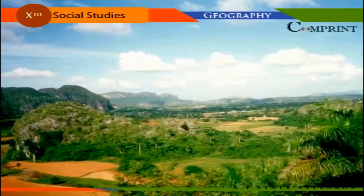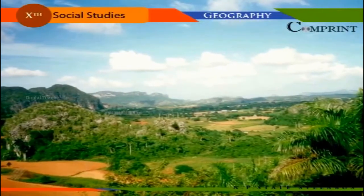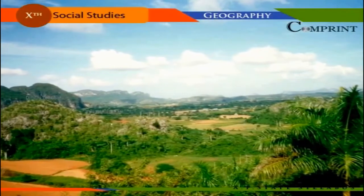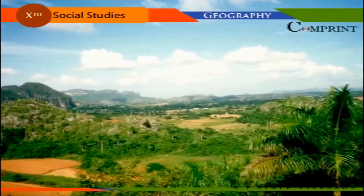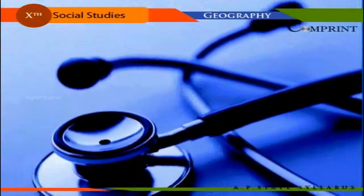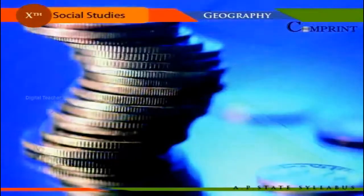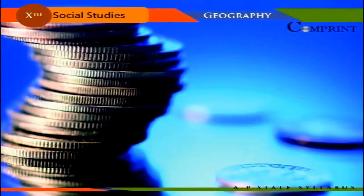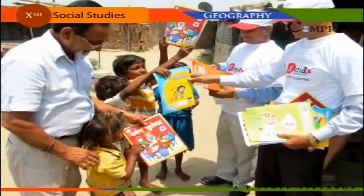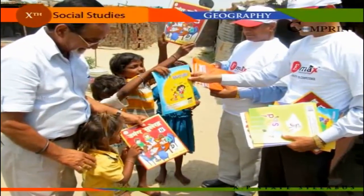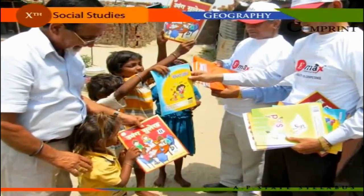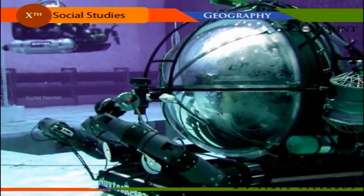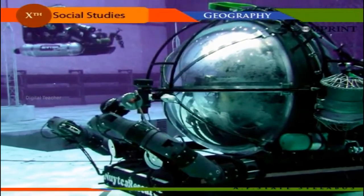Besides primary agriculture, the development of secondary and tertiary economic sectors through planned periods — including industrialization, urbanization, transport, communication, recreation, medical services, and banking — have created more employment opportunities. The spread of education, development of science and technology, and optimum utilization of available resources have given greater scope and prospects for sustainability.